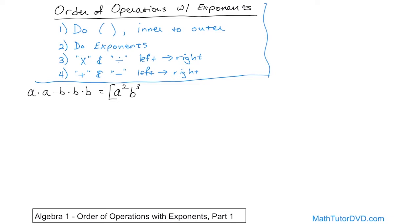You can also write this as b cubed a squared — it's the exact same thing because they're multiplied together. Three times four is the same as four times three, so a squared times b cubed is the same as b cubed times a squared. You can flip the order; it doesn't matter for multiplication.